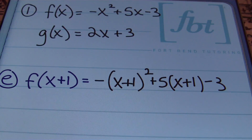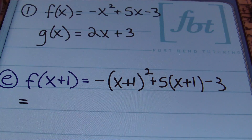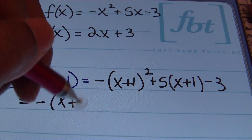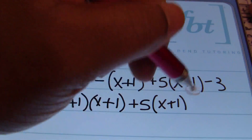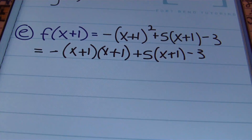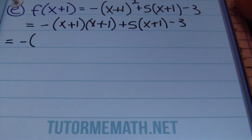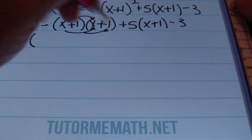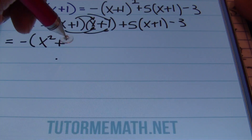From here, you're going to expand, multiply, and simplify in that order. I'll rewrite this by expanding x plus 1 squared as a negative of x plus 1 times x plus 1, plus 5 times the quantity of x plus 1 minus 3. I'll be distributing — a.k.a. FOILing — these binomials together. Bringing down that negative first with parentheses: x times x is x squared, x times 1 is x, 1 times x is x, and 1 times 1 is 1.